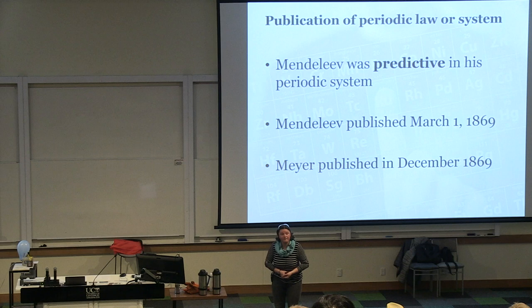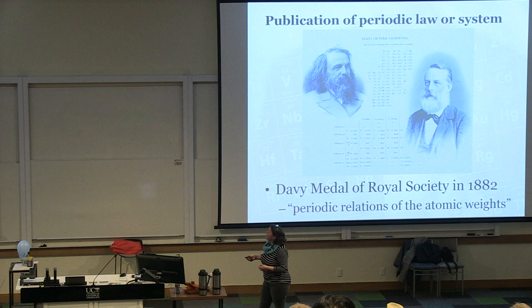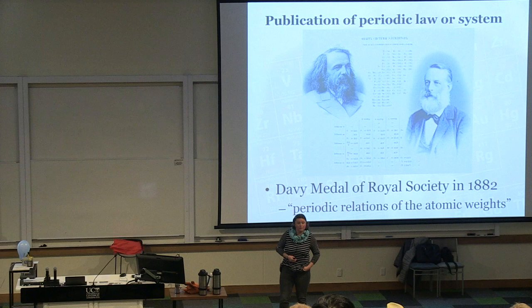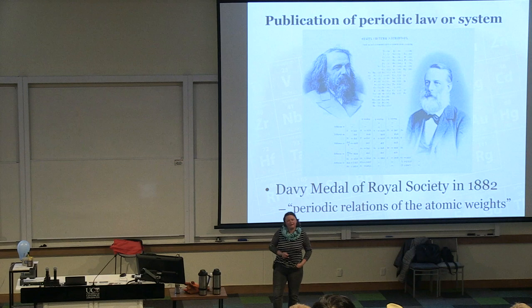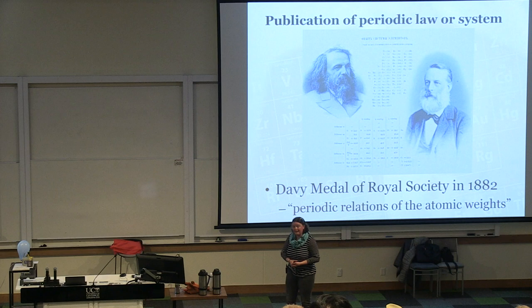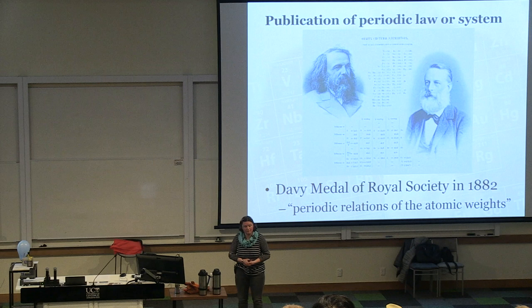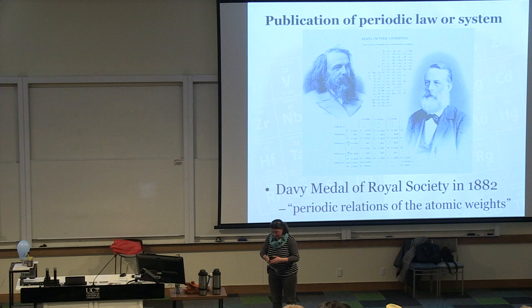Mendeleev was predictive in what he did — he left gaps in his table. They were both acknowledged for their work and in 1882 were jointly awarded the Davy Medal from the Royal Society for their work on the periodic relations of the atomic weights. Remember, at this time Thomson and Rutherford had not come into the equation — we didn't know about electrons, protons, and neutrons until a lot later. So really all they had to go on were atomic weights. It wasn't until the early 1900s that electrons and so on were known about.